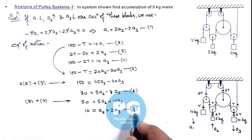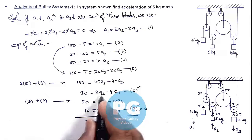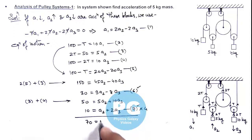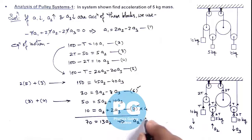From equations 6 and 7, we can eliminate a_y3 by multiplying equation 7 by 4 and adding it to equation 6. The 8a_y3 terms cancel out. On the left side: 40 plus 30 equals 70. On the right side: 9a_y2 plus 4a_y2 equals 13a_y2. This gives us a_y2 equals 70/13 meters per second squared, which is the acceleration of the 5 kg mass we were required to find. That is the result of this problem.